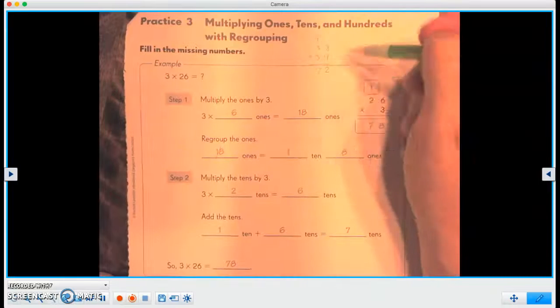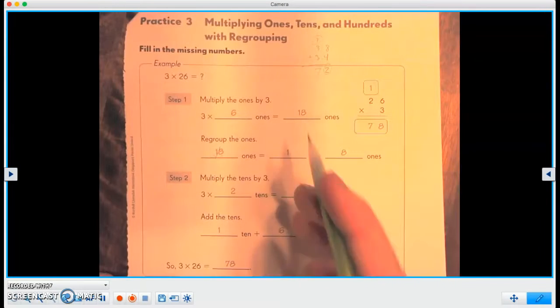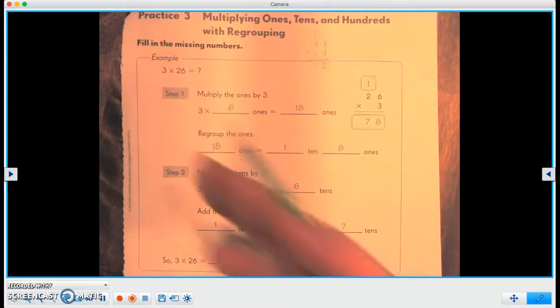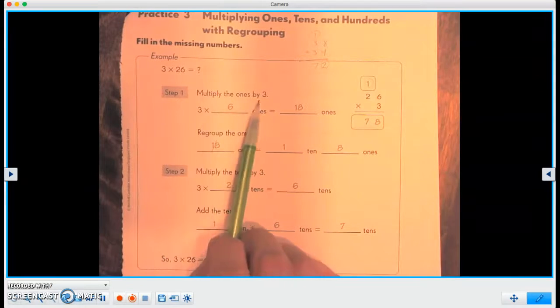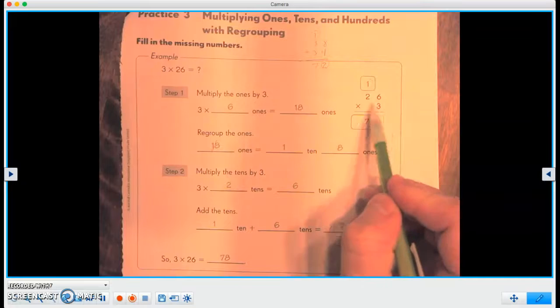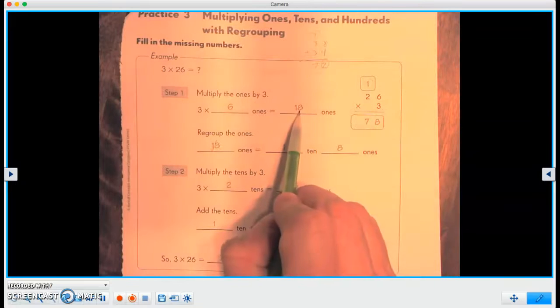It's this part of the 12 that we're going to be doing now with our multiplication. So let's look at our example. And we have three times 26. So multiply the ones by three. So there are six ones times three, which equals 18 ones.